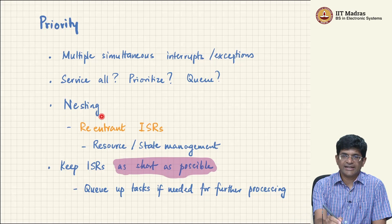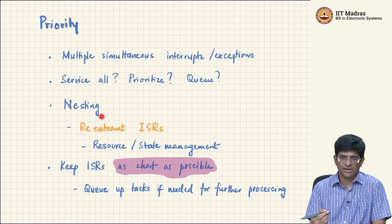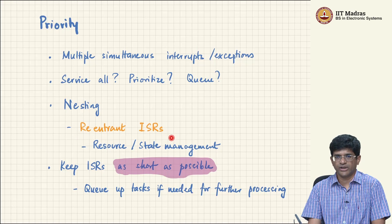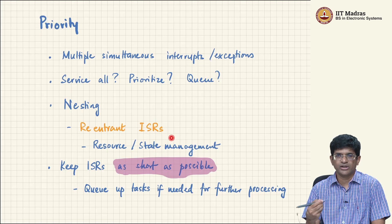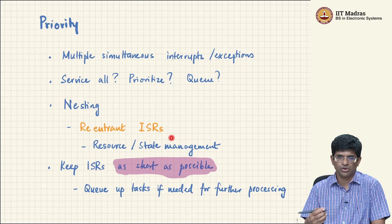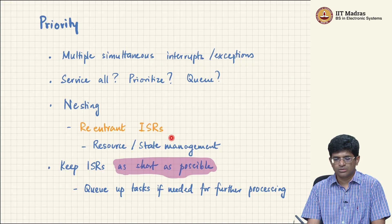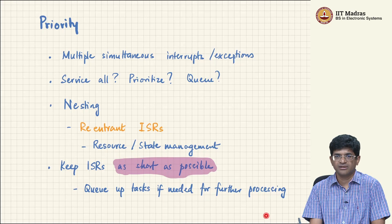The idea of nesting interrupts - where while handling one interrupt another one comes along - is also an important concept. This brings in the notion of reentrant service routines, which means that while in the middle of one interrupt service routine you may need to handle another. Not all interrupt service routines can be made reentrant. Handling a second interrupt while processing one can cause instability or unpredictable behavior. Creating reentrant ISRs is not trivial - it requires considerable resource and state management, but is often required especially in the context of operating systems.